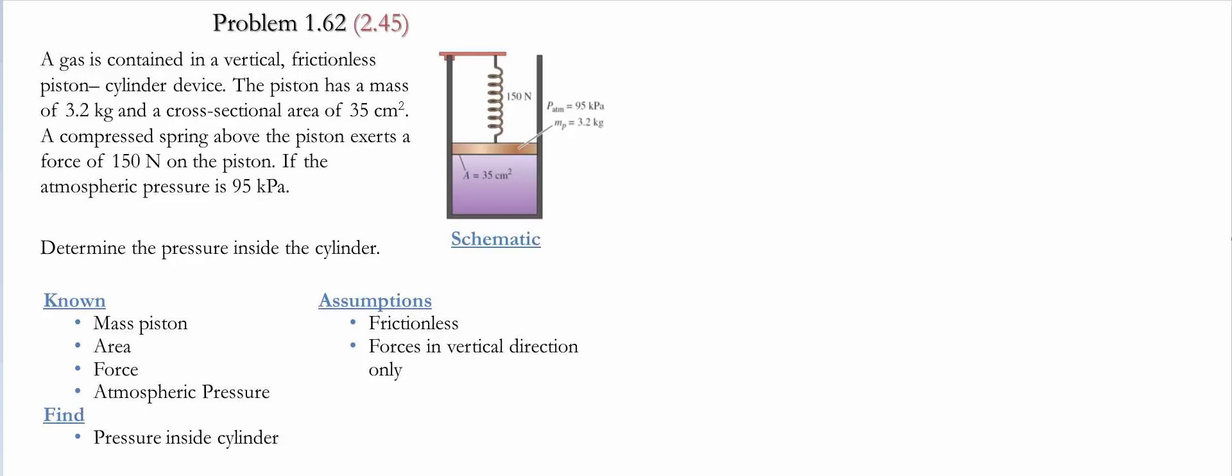A gas is contained in a vertical frictionless piston-cylinder device. The piston has a mass of 3.2 kg and a cross-sectional area of 35 cm². A compressed spring above the piston exerts a force of 150 N on the piston and it has an atmospheric pressure of 95 kPa.